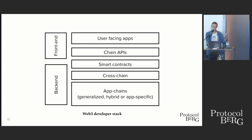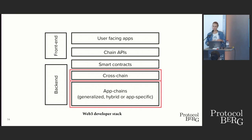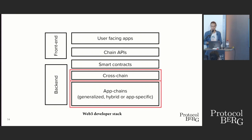What does this Web3 dev stack look like at a high level? At the very bottom we have core infrastructure that provides services to power end user experiences. As we work our way up the stack, we can start thinking about writing cross-chain programs that bundle these services to offer features to other app chains as well as front ends. Our focus today is how this stack applies to developing applications on Polkadot.